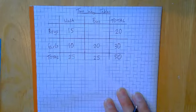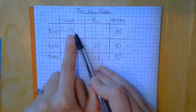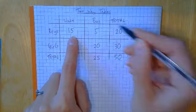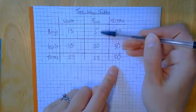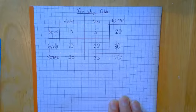Now I've got two ways of working out this number, and with any luck they're going to give me the same thing. So I've got 15 boys, and I need a total of 20, so I'm going to have to have five more. And if I look down the bus column, five add 20 equals 25.